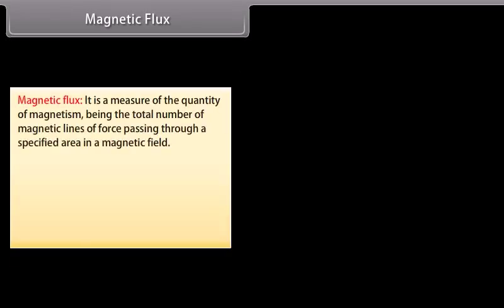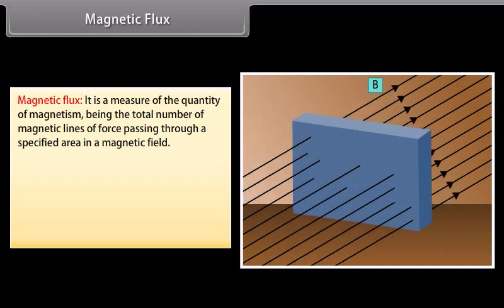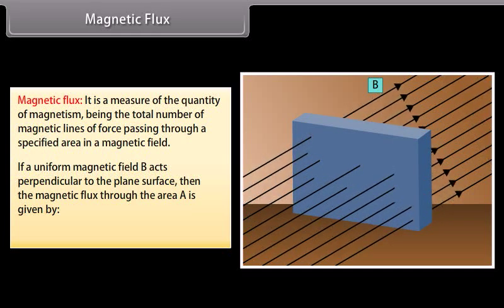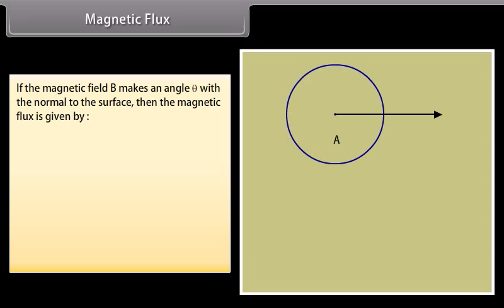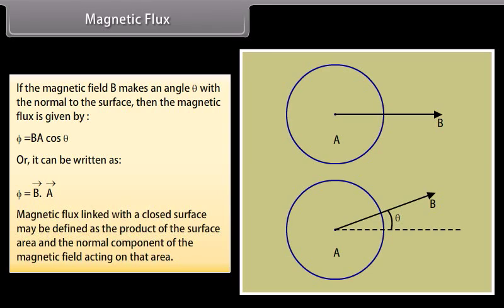Magnetic flux is a measure of the quantity of magnetism — the total number of magnetic lines of force passing through a specified area in a magnetic field. If a uniform magnetic field B acts perpendicular to a plane surface, the magnetic flux through area A is given by B × A. If the field B makes an angle theta with the normal to the surface, the magnetic flux is given by BA cos theta, or phi = B · A (dot product). Magnetic flux linked with a closed surface is defined as the product of the surface area and the normal component of the magnetic field acting on that area.